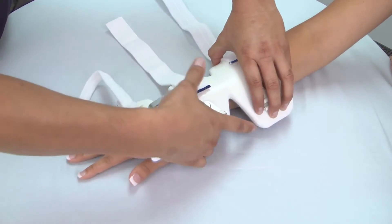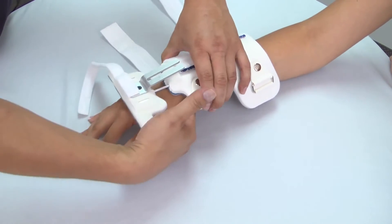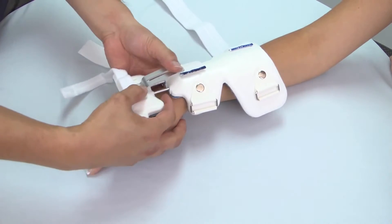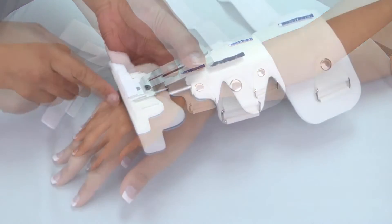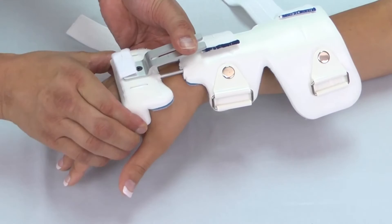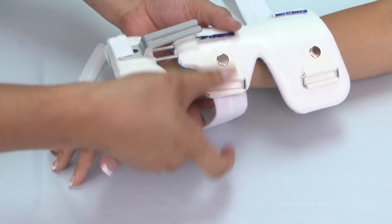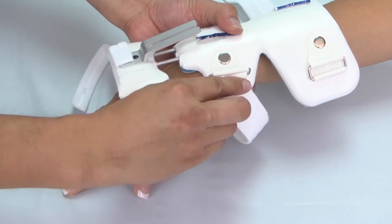To begin, apply a new splint to the forearm with the distal end of the splint extending to the middle of the MP joints. Then fold the sides of the splint to contour to the forearm and hand, and tighten the Velcro straps.